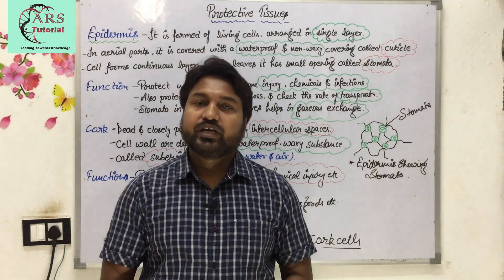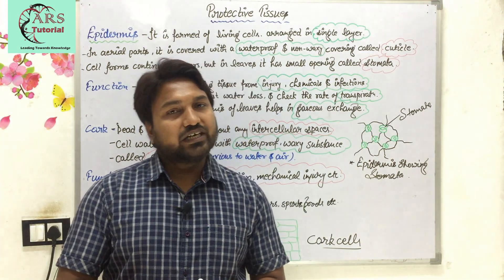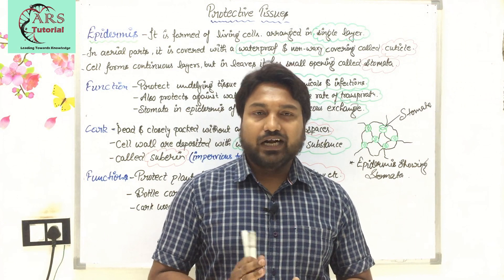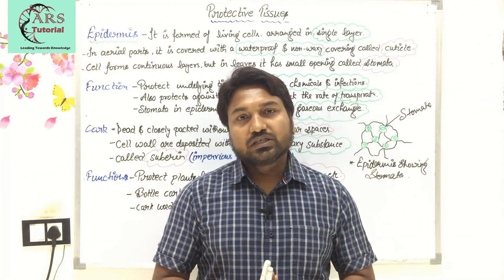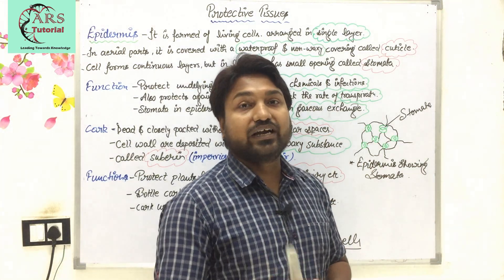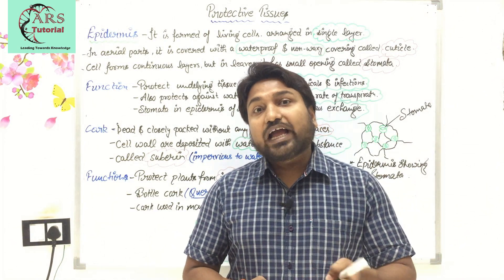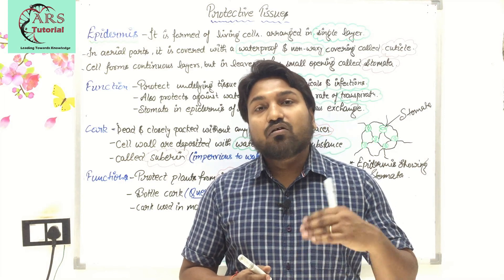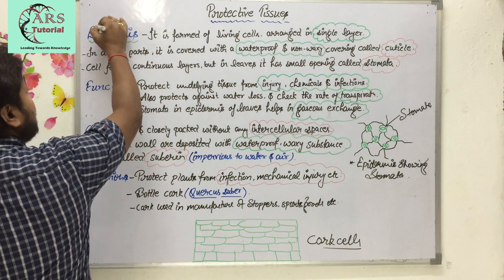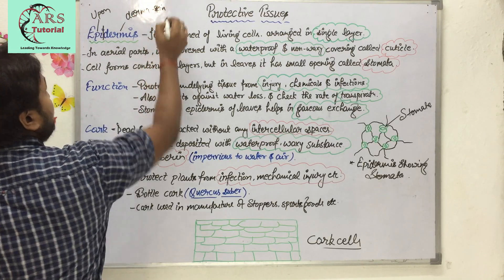We are now going to discuss protective tissue in plants, which is of two types: epidermis and cork. In plants, after simple permanent tissue — parenchyma, colenchyma, sclerenchyma and their types — we discuss protective tissue. As the name indicates, if you cannot understand the meaning of a biological term, just try to break it down. Here, 'epi' means 'upon' and 'dermis' is related to 'derma,' which means skin, so epidermis means above the skin.